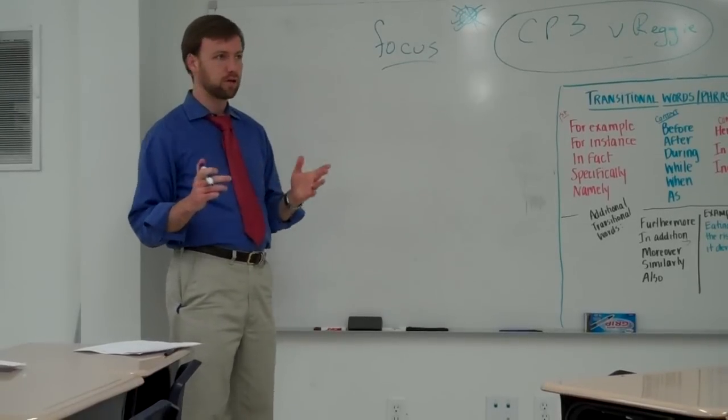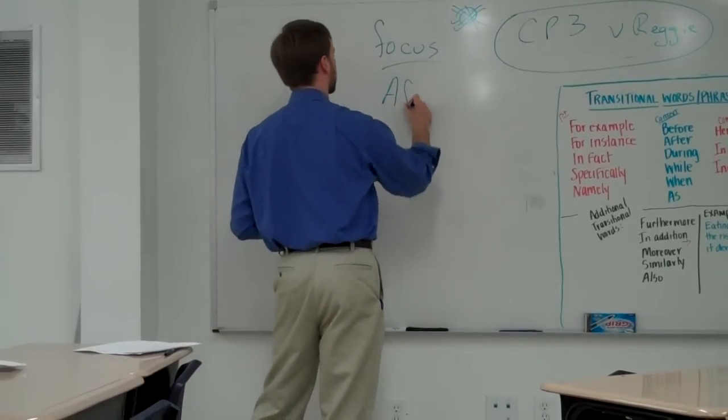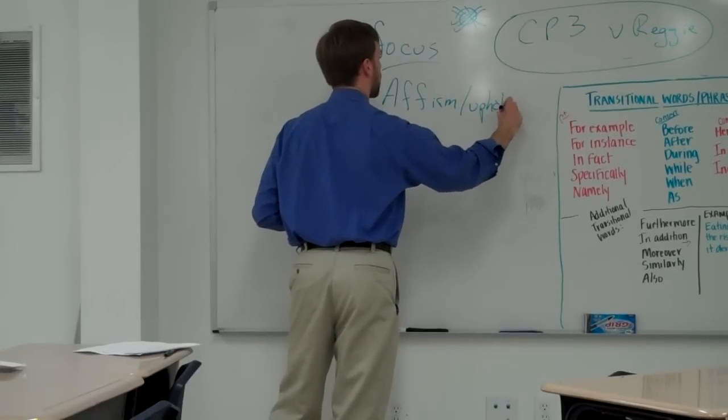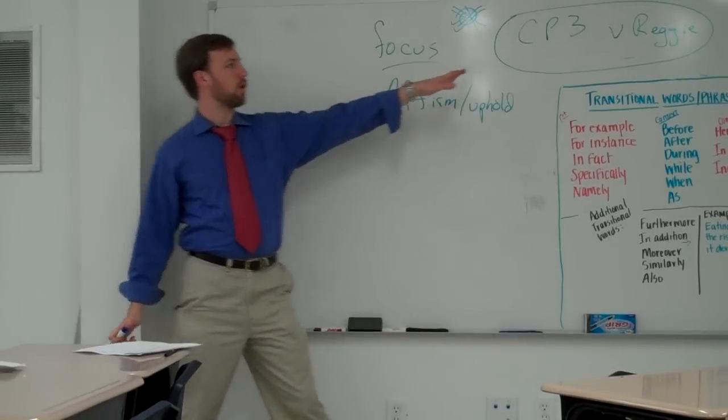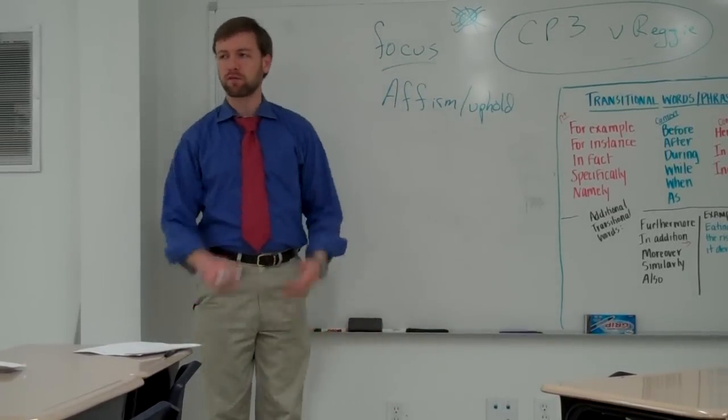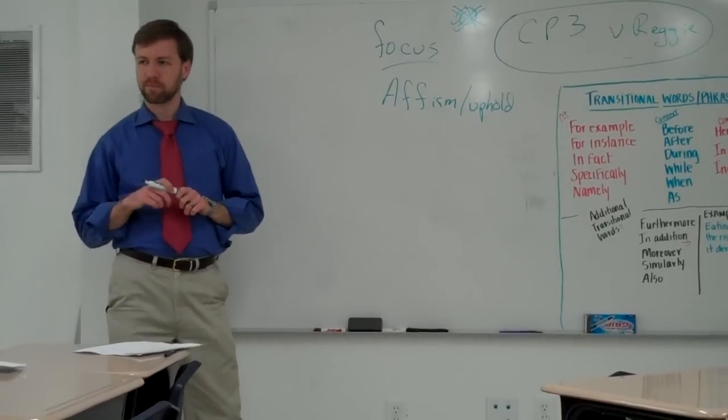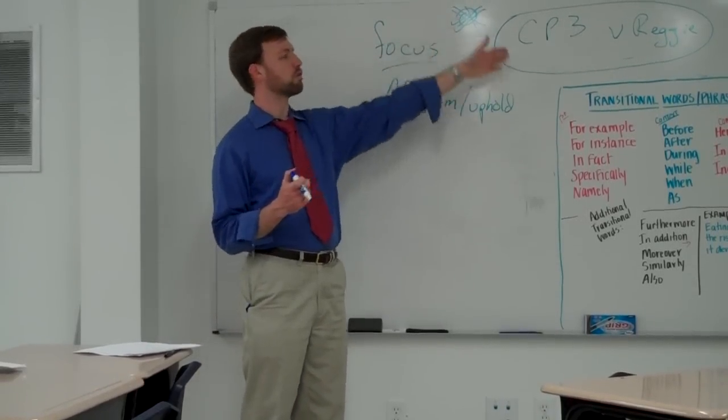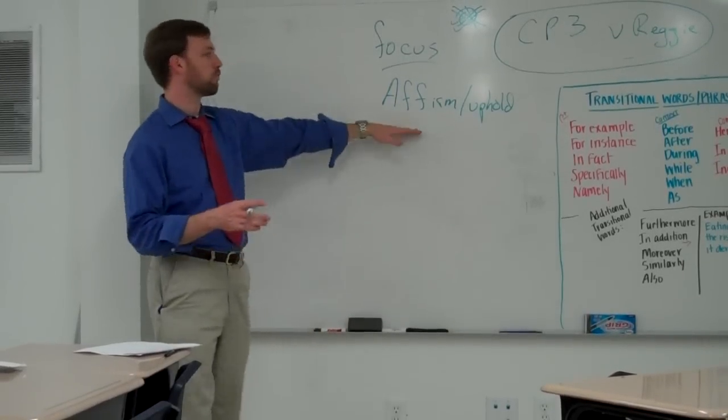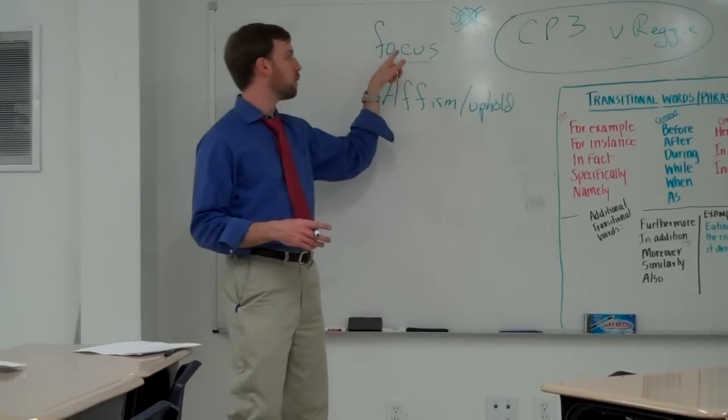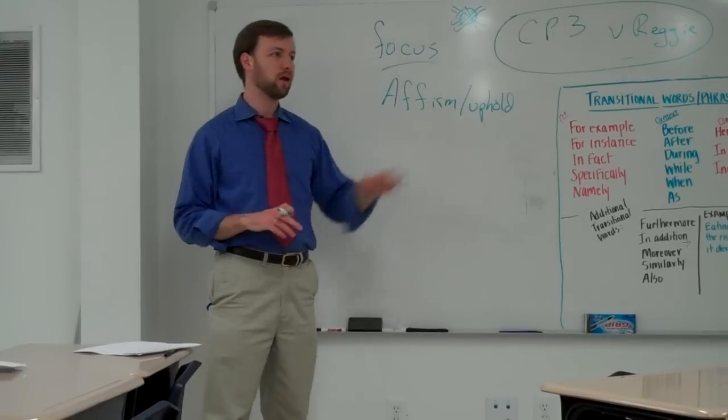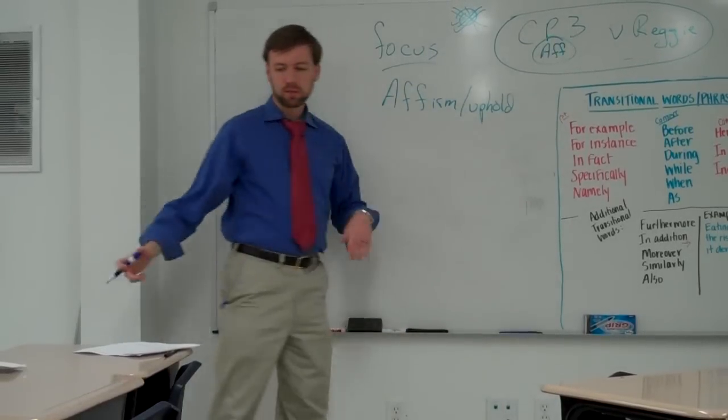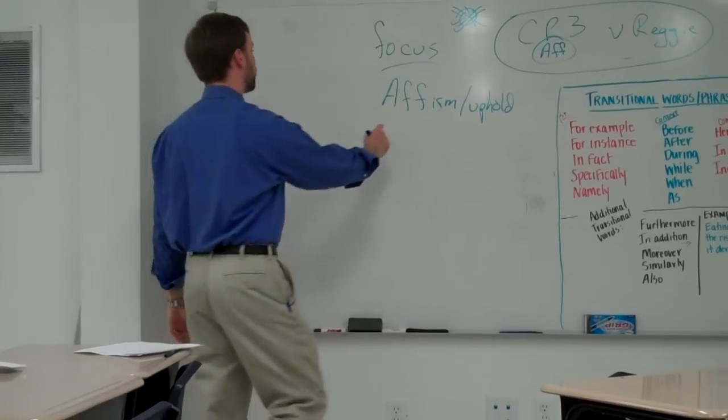And they're called the affirmative and the negative. The affirmative team's job is to affirm the resolution or uphold the resolution. So Devontae, what we have, Chris Paul is better athlete than Reggie Bush. What would the affirmative say? Exactly. That Chris Paul is a better athlete. So the resolution tells us Chris Paul is better than Reggie Bush. That means the affirmative team is going to affirm or uphold that statement. The affirmative team is going to take Chris Paul.